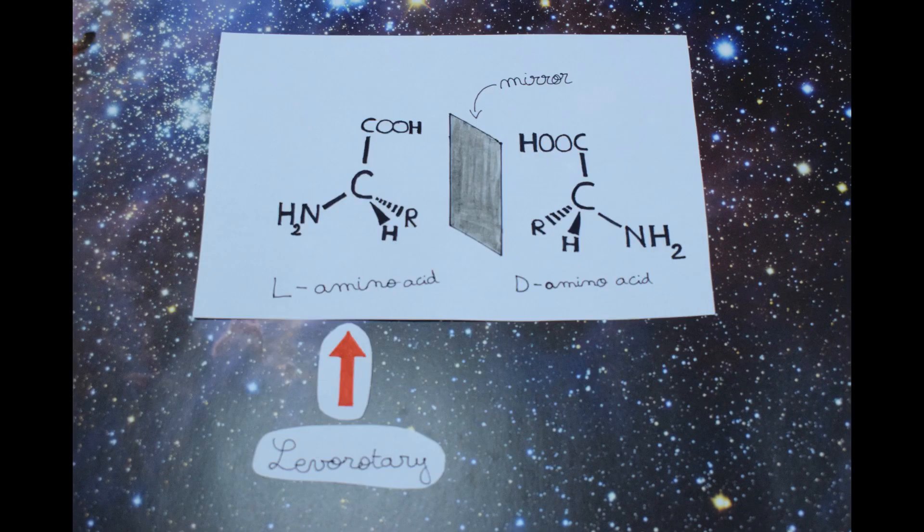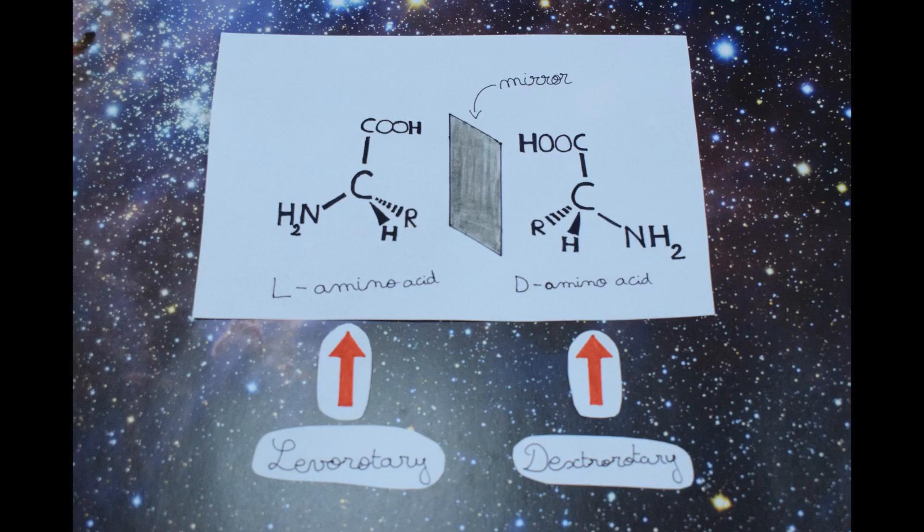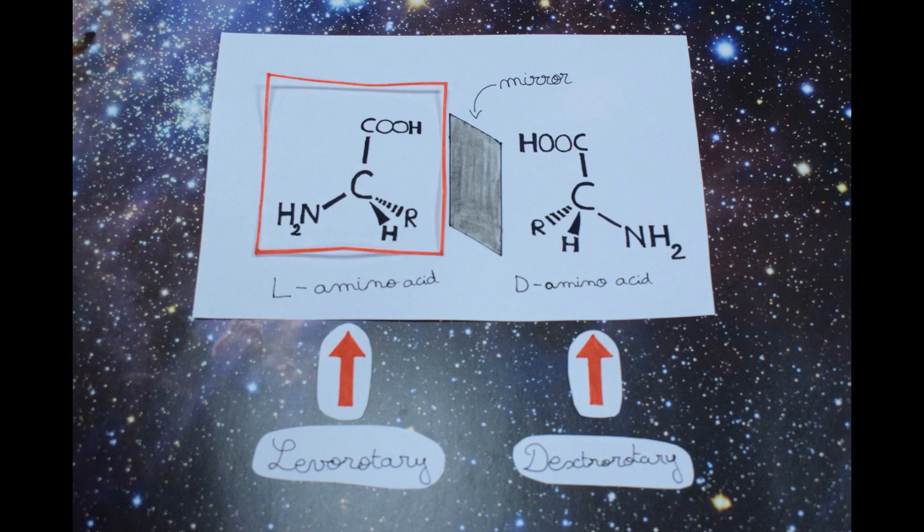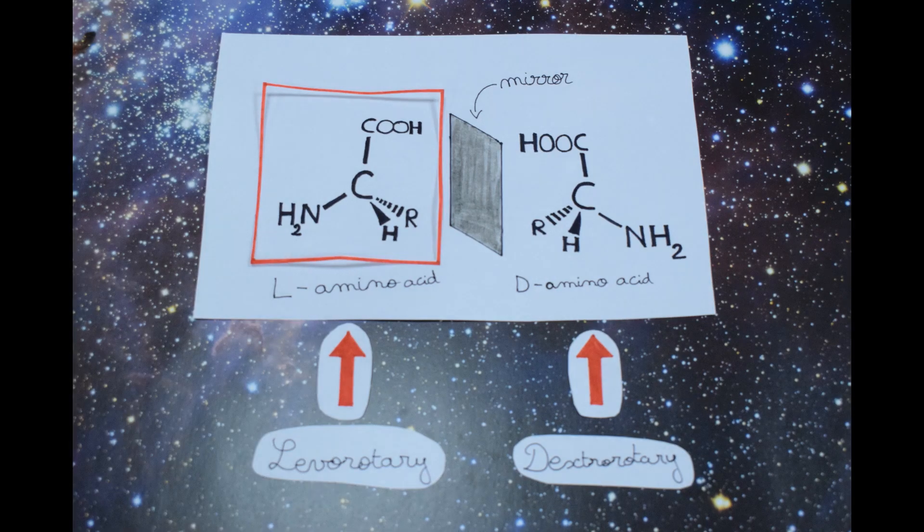Levorotatory is one of the two forms of a chiral molecule, so a molecule that cannot be superposed on its mirror image. So one good proof to support the hypothesis would be to find at least most of such molecules.